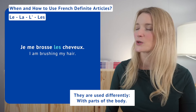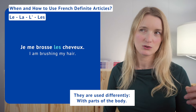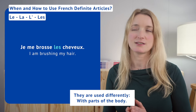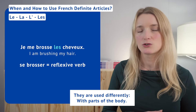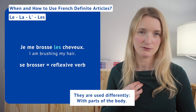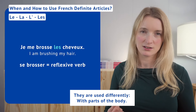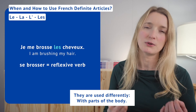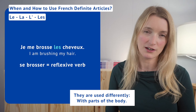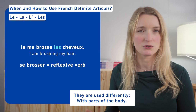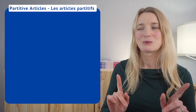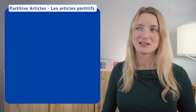Let's see the sentence: je me brosse les cheveux — 'I am brushing my hair.' In French we use a reflexive verb — 'me brosse' — which means we are doing the action to ourselves, so we don't need to add a possessive adjective. We just use the regular definite article: je me brosse les cheveux — not 'je me brosse mes cheveux.'